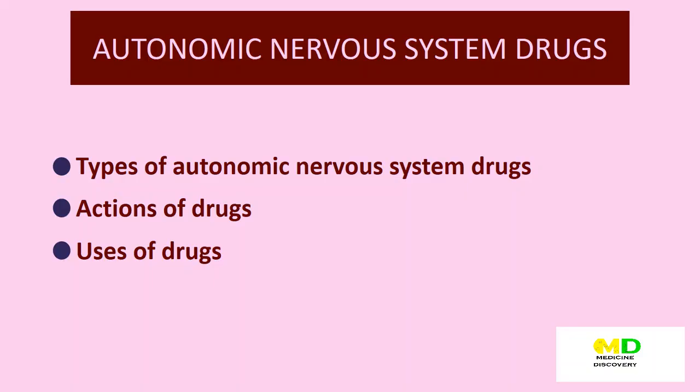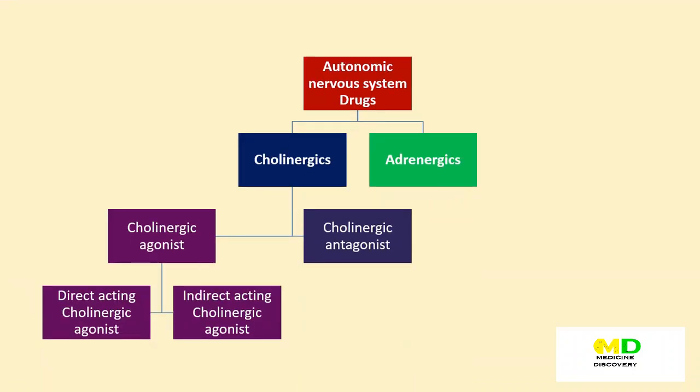First we need to know the types of autonomic nervous system drugs. Second, we need to know how the drugs act. And third are the clinical uses of these drugs. Drugs affecting the autonomic nervous system are divided into two groups according to the type of neurons involved in the mechanism of action: the cholinergics, which are divided into cholinergic agonist and cholinergic antagonist, and the adrenergics, which are divided into adrenergic agonist and adrenergic antagonist.